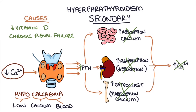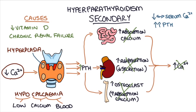This is called hyperplasia, and it leads to the glands becoming more bulky and secreting more parathyroid hormone as a baseline level. The serum calcium level will normally be low or normal, but the parathyroid hormone will be high in secondary hyperparathyroidism. This condition can be treated by correcting the underlying cause, like the vitamin D deficiency or doing a renal transplant in patients with renal failure.